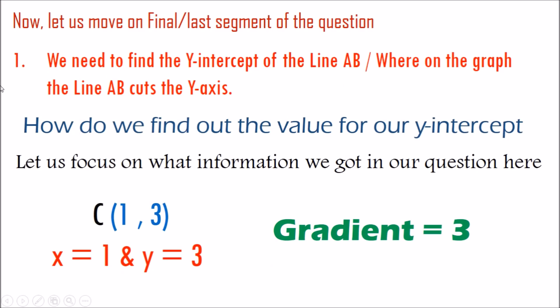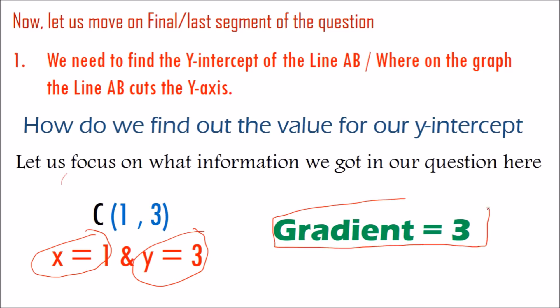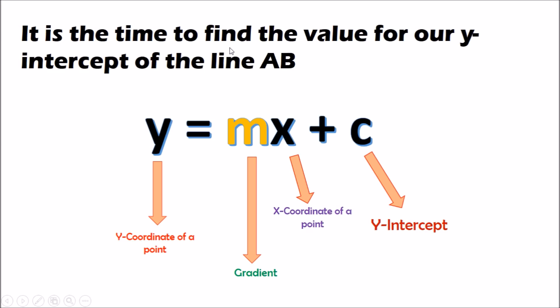Now let's move to the last segment of our question: find out the y-intercept of line AB, or where on the graph the line AB cuts the y-axis. In this question we have one coordinate C, which gives us a value for x and a value for y. We also have the gradient of line AB which is 3. It is now time to find the y-intercept by substituting all those values into our equation of line.